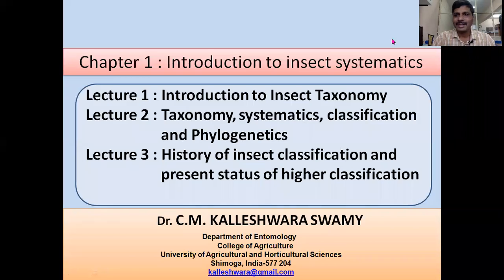Hi students, welcome back. Insects are the most ubiquitous and dominant organisms present on this planet Earth, and we also know that many of these species are cryptic, and many of the insect species which are there on this planet Earth have not been collected, described, and named. Hence there is a need of taxonomists and systematicians who go out, collect, describe, and classify these insects.